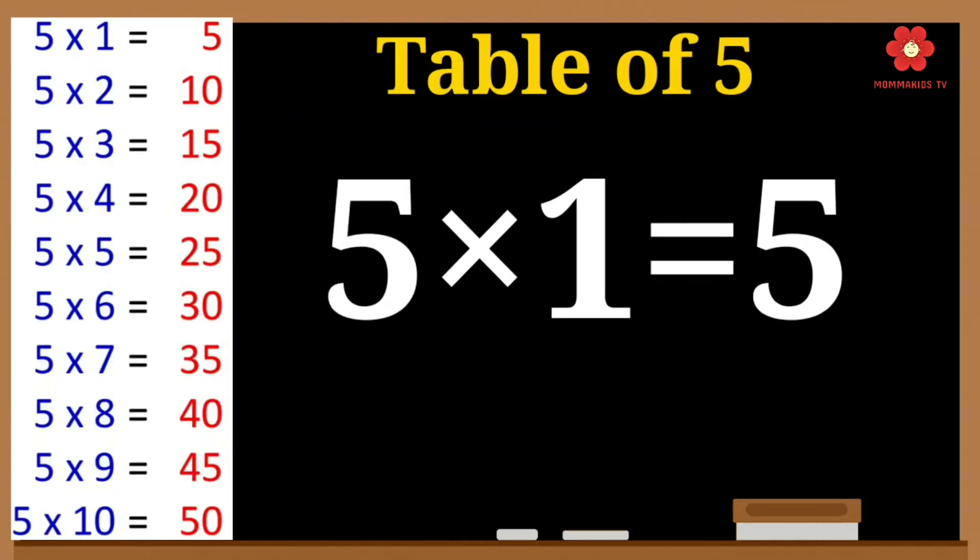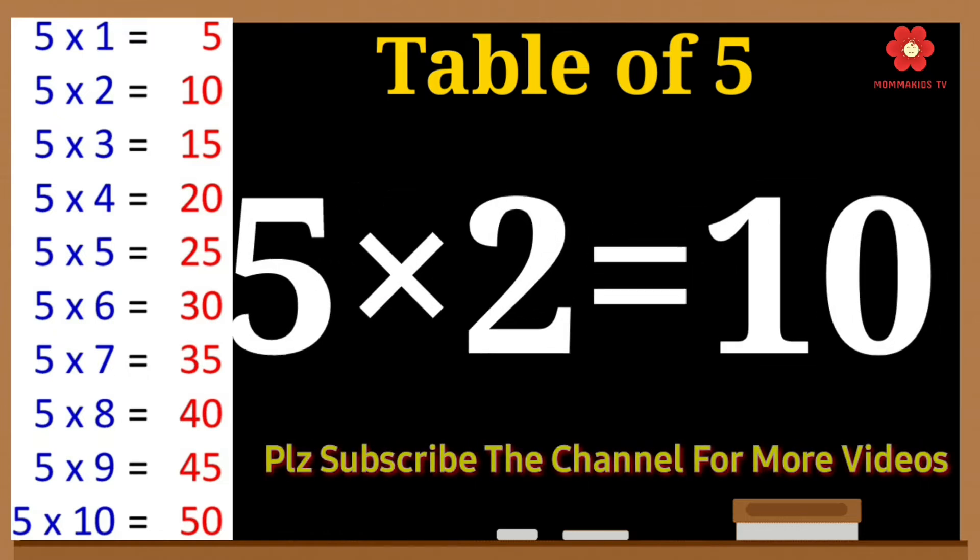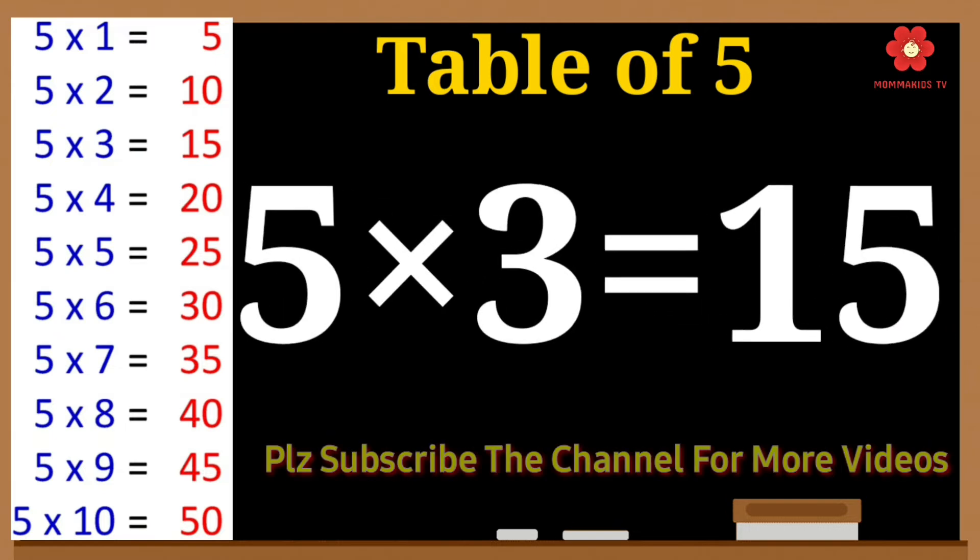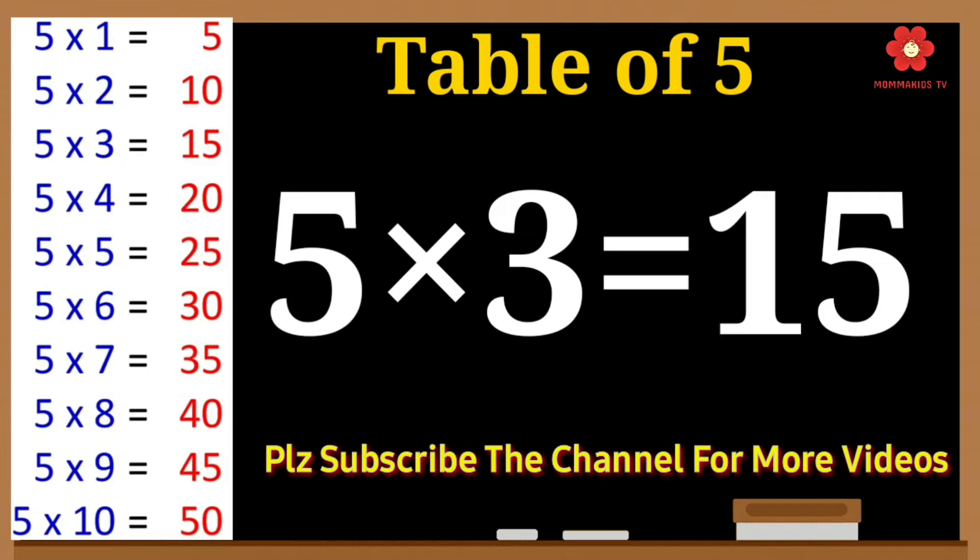Table of 5: Five ones are five. Five twos are ten. Five threes are fifteen.